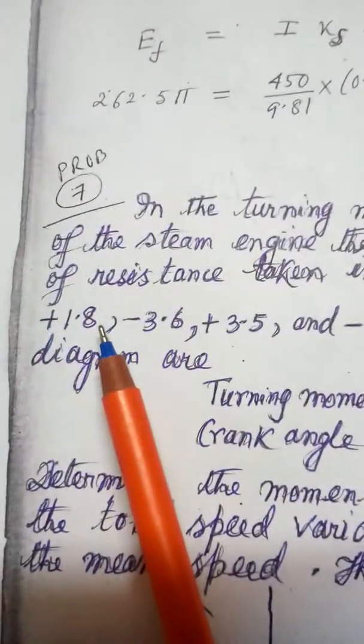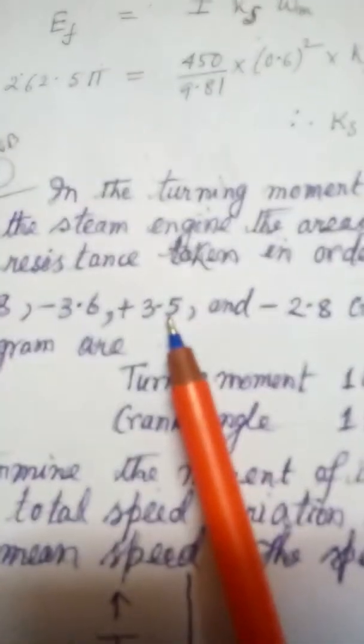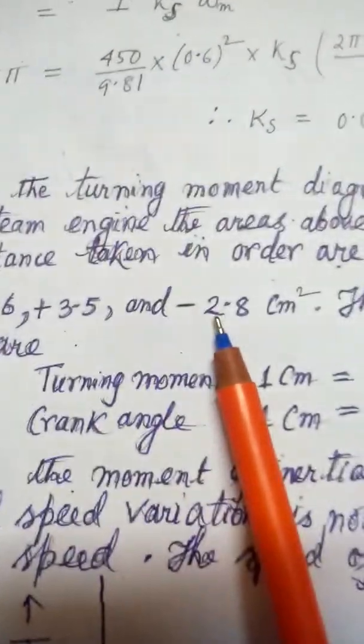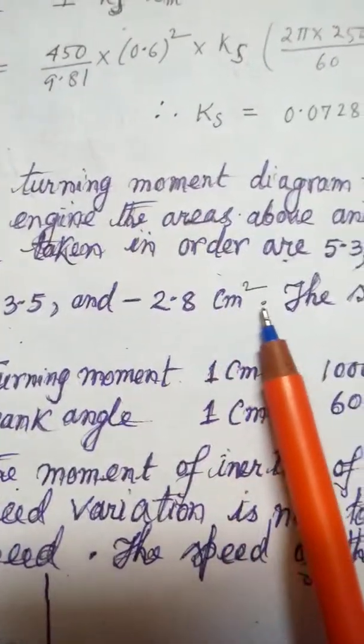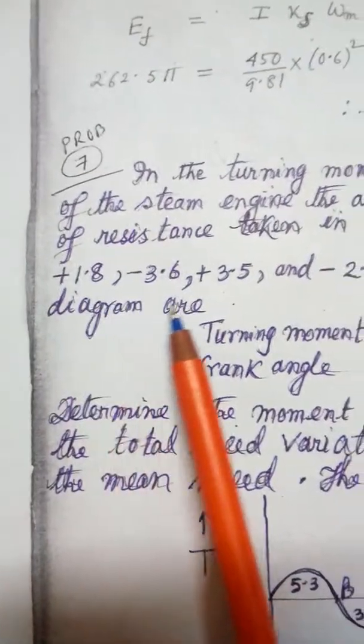Point 7, plus 1.8, minus 3.6, plus 3.5, and minus 2.8 centimeter square. These scales of the diagram are...